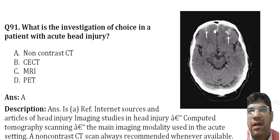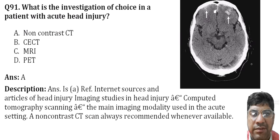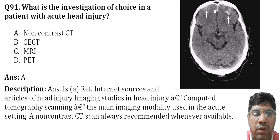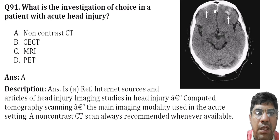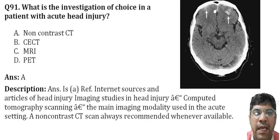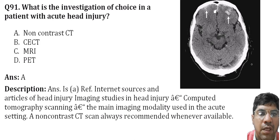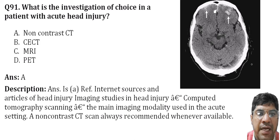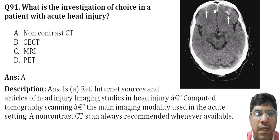Which investigation is of choice for a patient with head injury? The answer is non-contrast CT. This imaging modality is commonly used in the acute setting to assess head injuries, providing a detailed assessment of brain structures. It can quickly identify intracranial hemorrhage, fractures, and traumatic brain injuries.